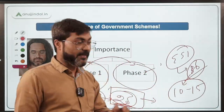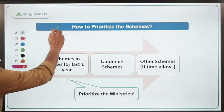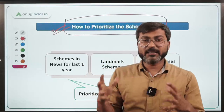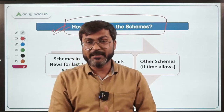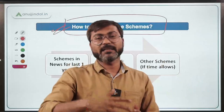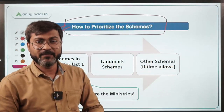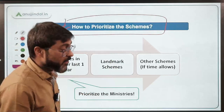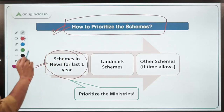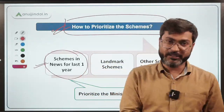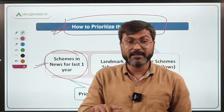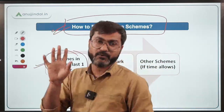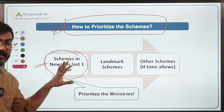The next question is how to prioritize the schemes. The solution is to prioritize: first, cover those schemes which have been in the news for the last one year — all of these have been covered through the PIB sessions. For enrolled students, I have provided a separate document for schemes which have been in use or launched in the last one year.